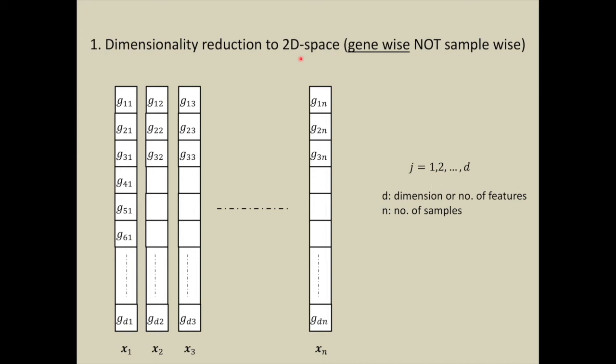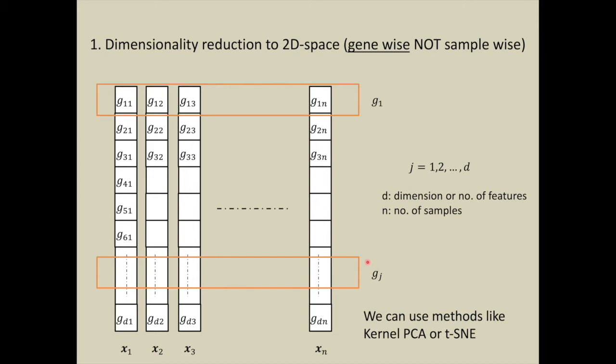If you use n samples to do dimensionality reduction in the lower dimensional space, you will get n samples. However, that's not what we want. If you take gene-wise - g11, g12, g13, g1n - you call this g1. This is a feature vector g1 which has n features. In a similar way, any j-th component or j-th row we represent as gj.